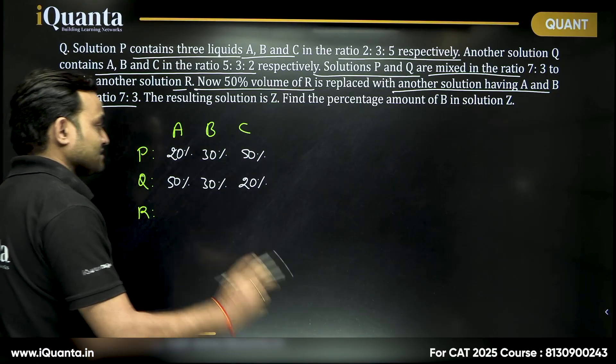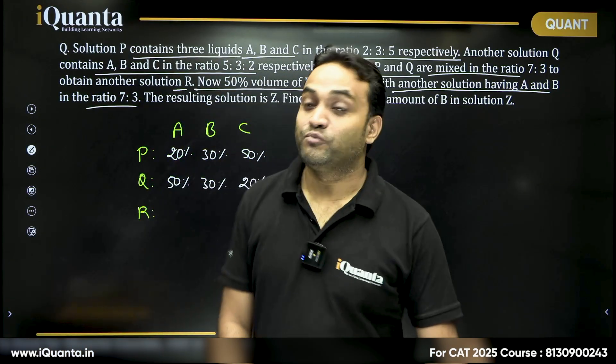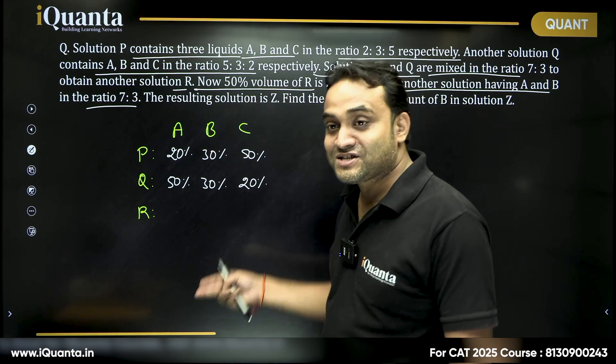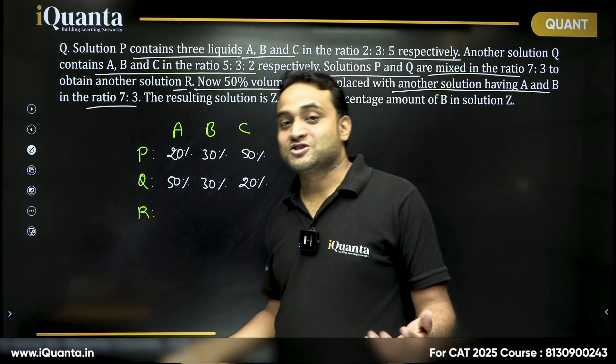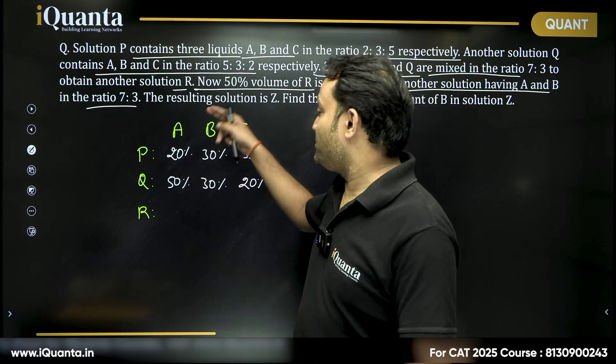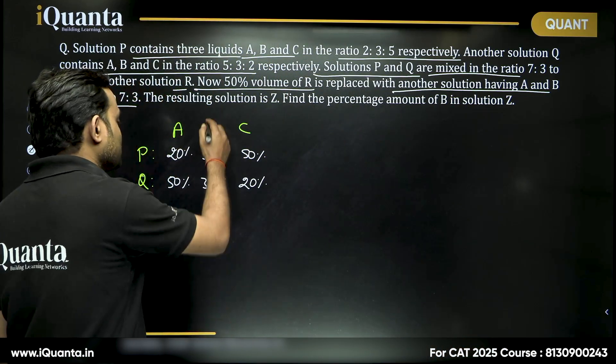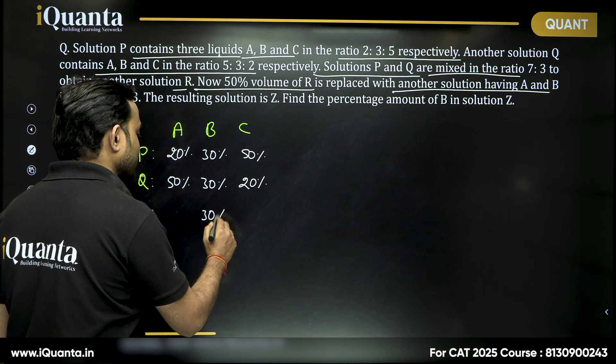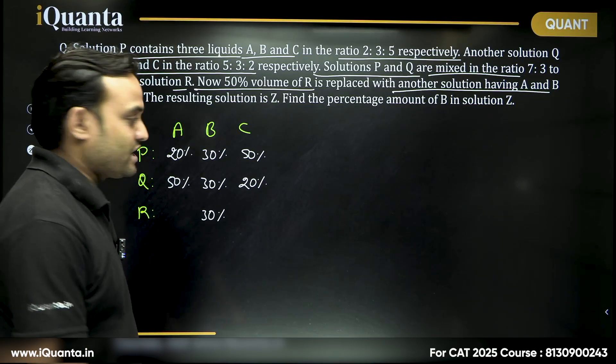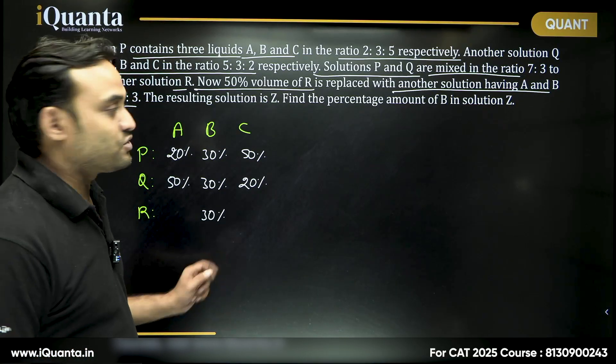In R, see in P and Q in both of them B is 30 percent, right? It does not matter in what ratio we mixed these two, the percentage of B is going to be 30 percent. The percentage of B is going to be 30 percent.